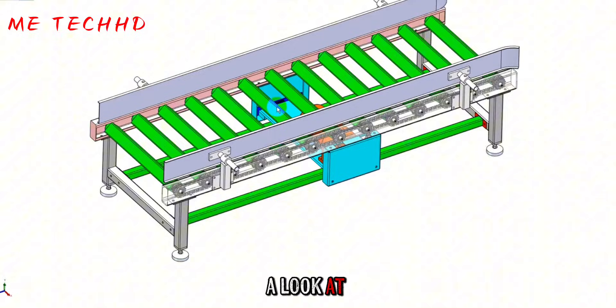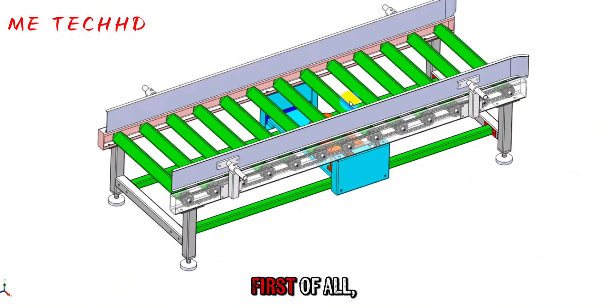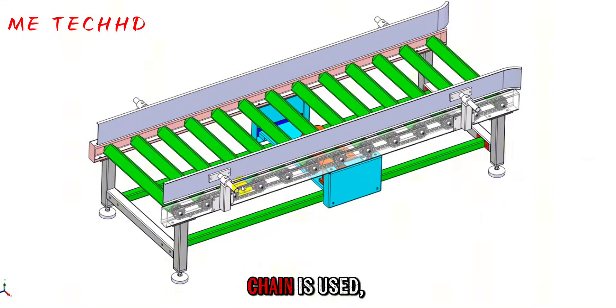Let's take a look at their differences and options. When this double row chain is used, it is generally for medium load. For example, the load is generally 100 kilograms, 200 kilograms, or tens of kilograms.